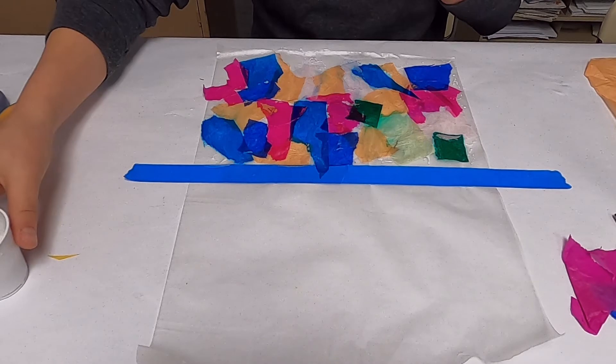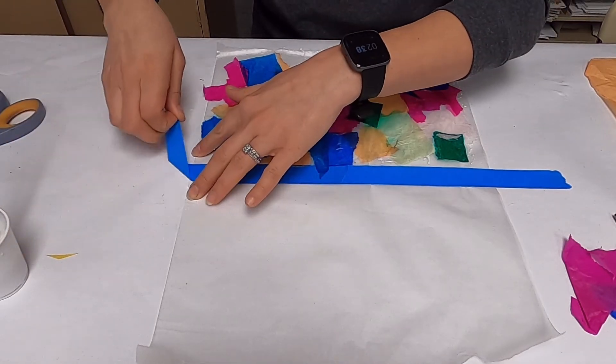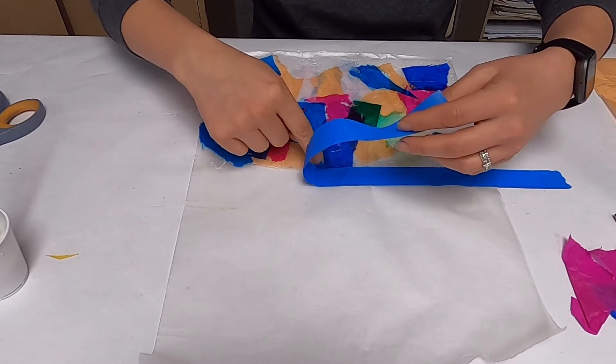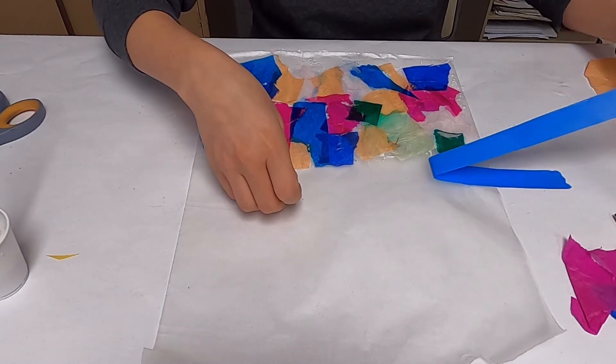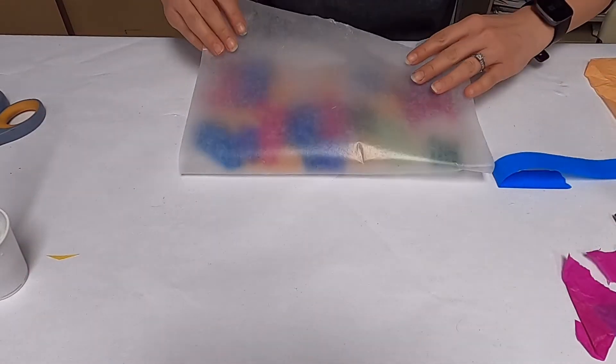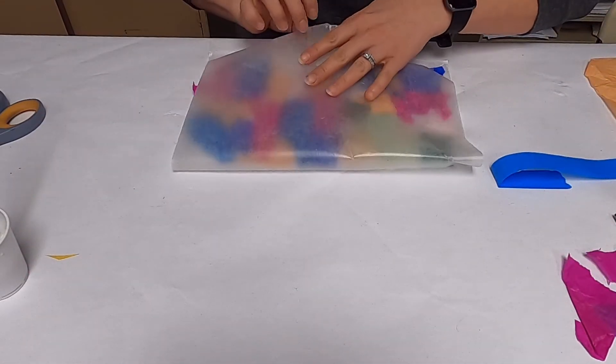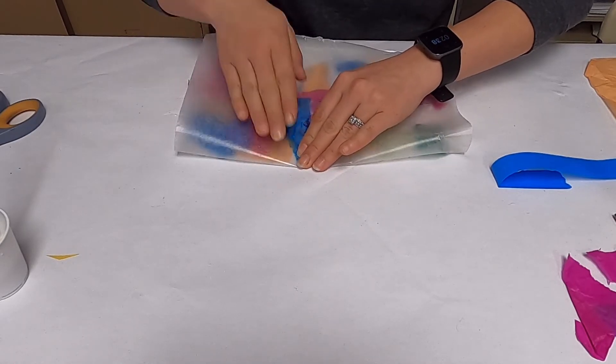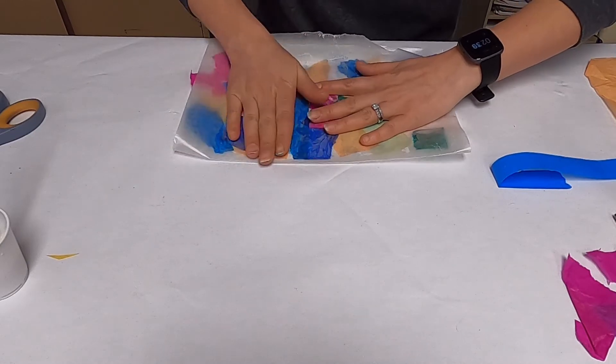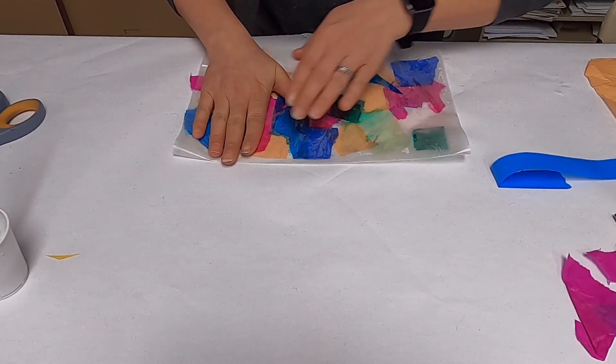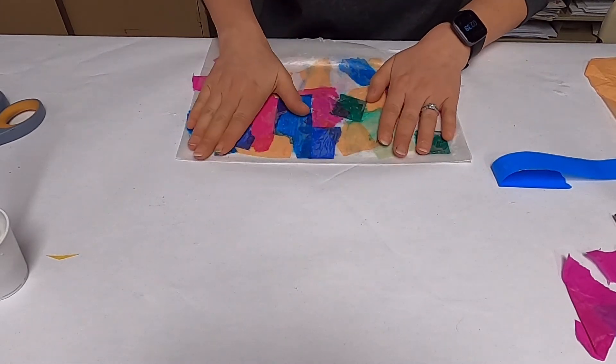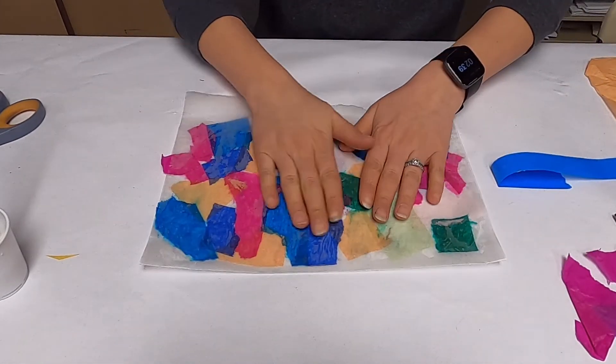Once you've covered everything, carefully peel off your tape, then slowly take your wax paper and fold it over on top. Press down, and hopefully you've put enough glue so it will stick to itself.